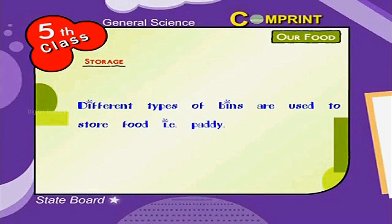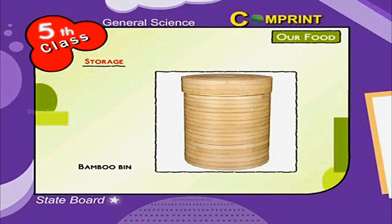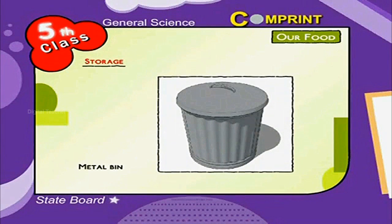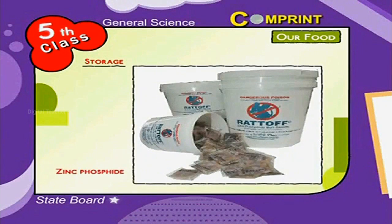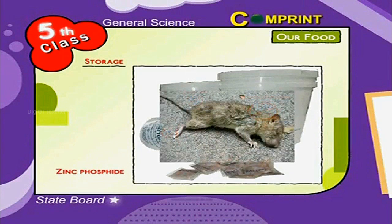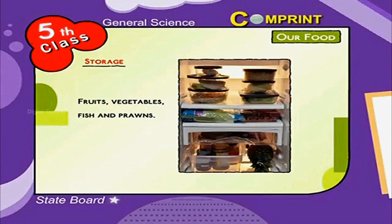Different types of bins are used to store paddy: bamboo bins made of bamboo, metal bins made of metal sheet, and cement bins made of cement rings. Zinc phosphide is used to kill rats. Agricultural products having moisture are stored in cold storages — for example, fruits, vegetables, fish and prawns.